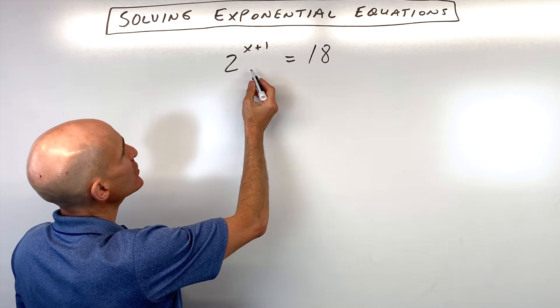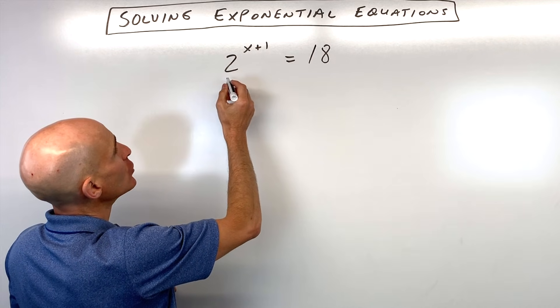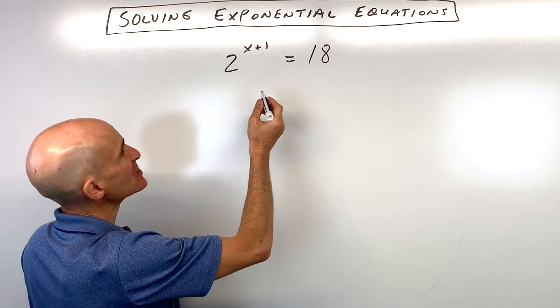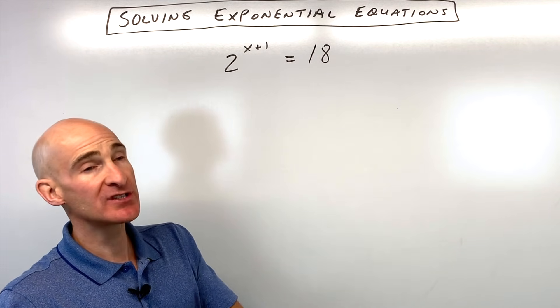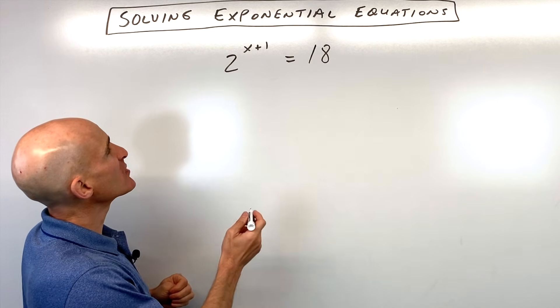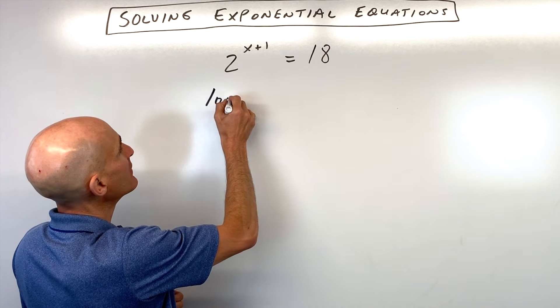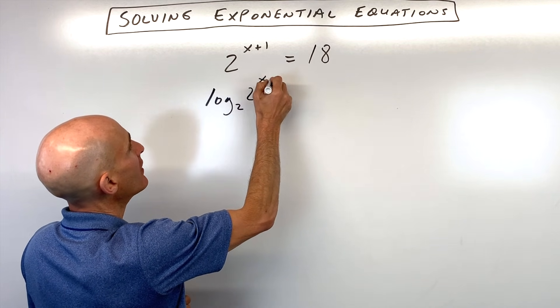The first thing I would do here is take the log of both sides of the equation. You could take log base 2, you could take log base 10. It doesn't really matter, but in this case, I'm going to take the log base 2 of both sides.